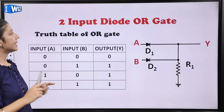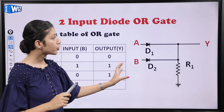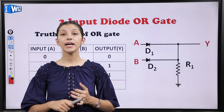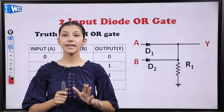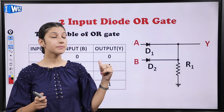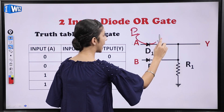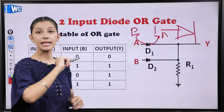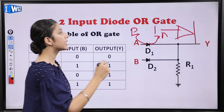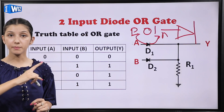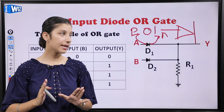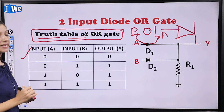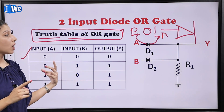Next is two-input diode OR gate. We will see how OR gate can be built using diodes. These are normal p-n junction diodes. If it is forward biased it will conduct; if reverse biased it will not conduct. Forward bias means when high input (1) is given to the p-side, it conducts. If input 0 is given — reverse biasing it — it will not conduct. If I have 2 inputs, the number of possible combinations is 2 raised to the power n, where n is the number of inputs — that is 2² = 4.